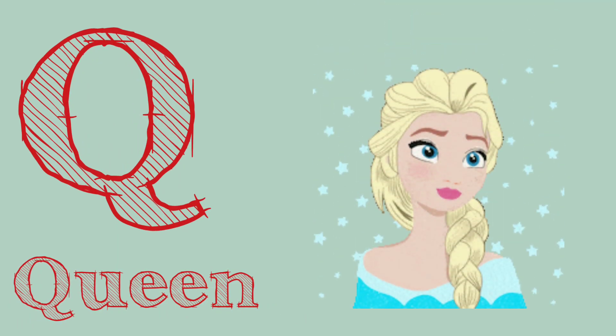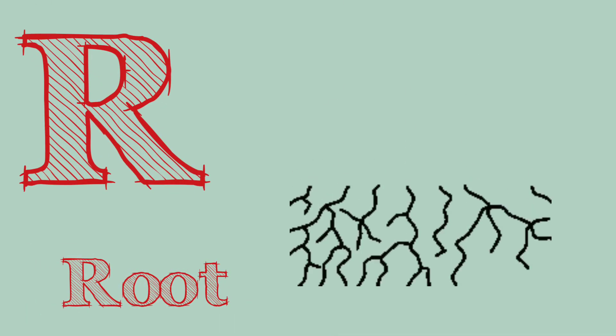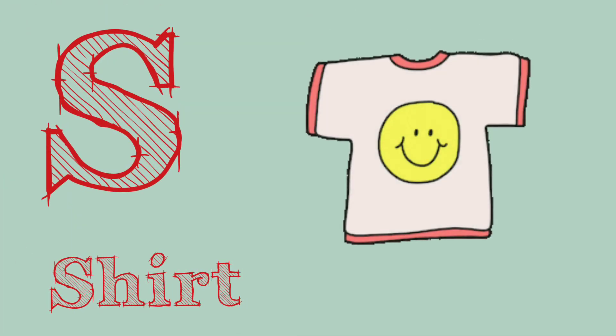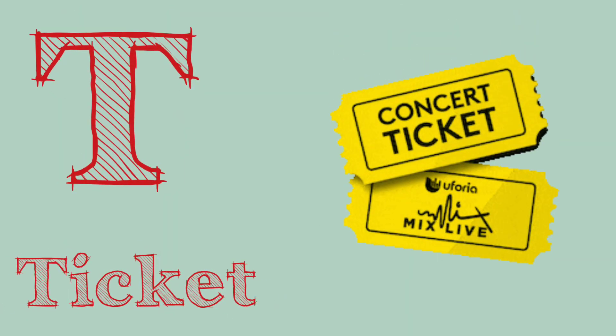Q. Q is for queen. R. R is for root. S. S is for shirt. T. T is for ticket.